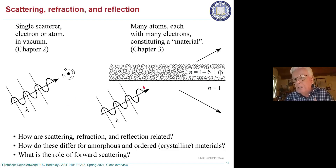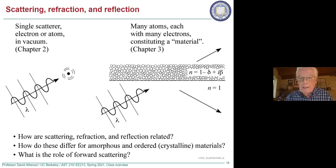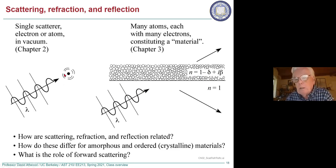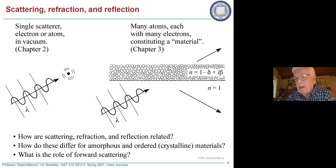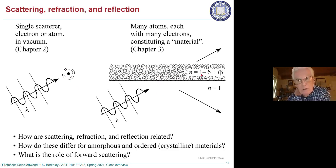To understand scattering and many other things in the class, we need to start with Maxwell's equations. They'll be written as if in vacuum with one or a few particles. In chapter 2 we'll look at single objects, and in chapter 3 we'll look at more complicated things — materials, thin layers, thin films — where the refractive index arises naturally.